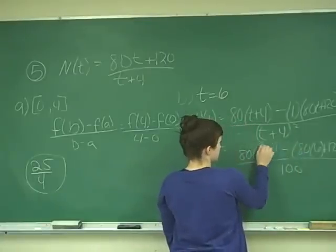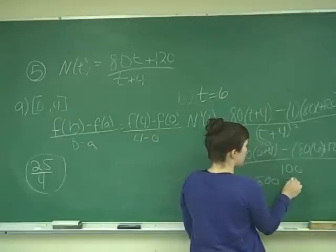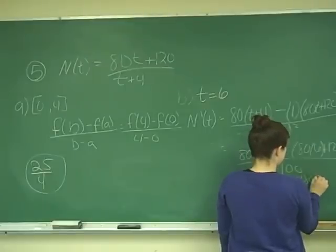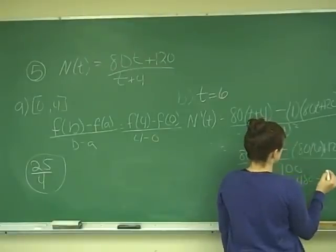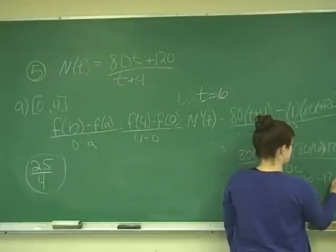So here, this gives me 10, 80 times 10 is 800, minus 80 times 6 is 480, minus 120, all over 100.